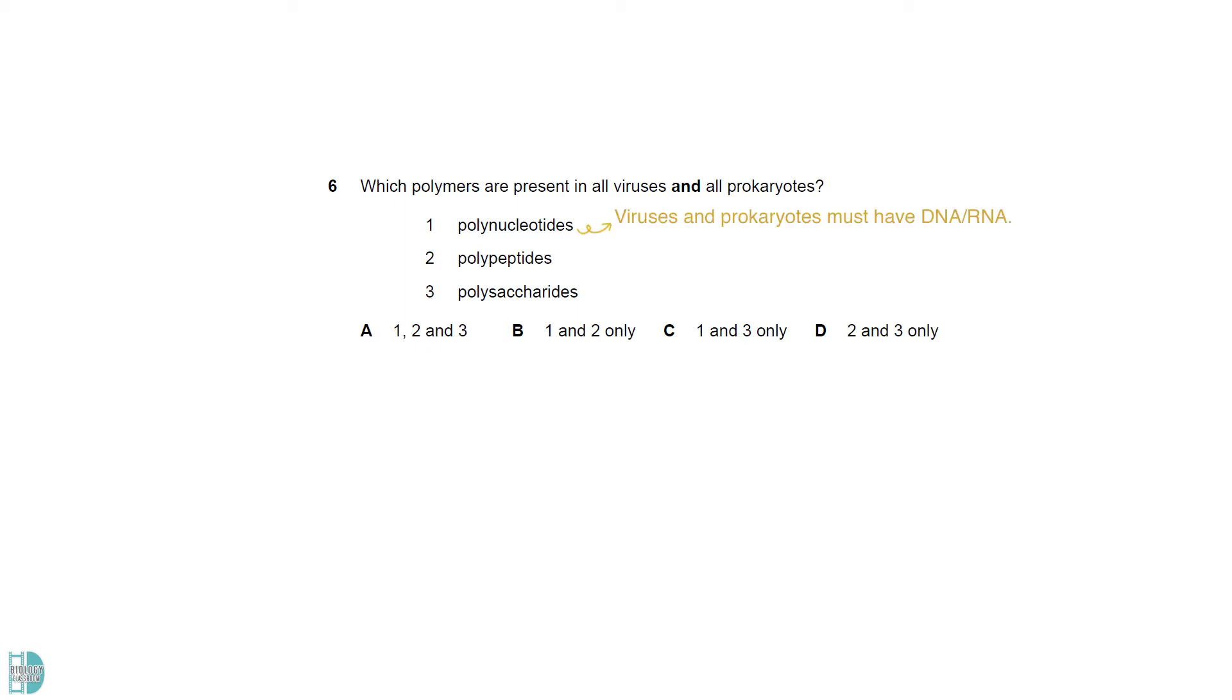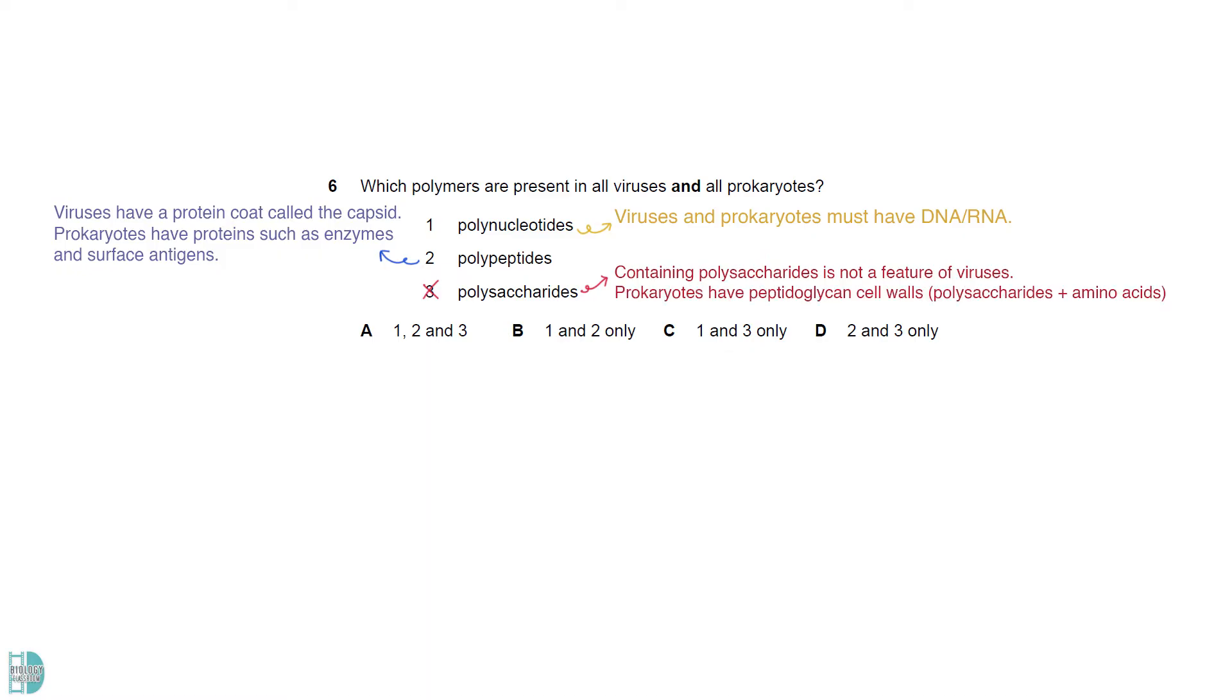Polynucleotides are found in both viruses and prokaryotes. They must have RNA or DNA. Polypeptides are also found in both. Viruses have a protein coat called a capsid, while prokaryotes have proteins such as enzymes and surface antigens. Containing polysaccharides is not a feature of viruses. Prokaryotes have peptidoglycan cell walls, which are composed of polysaccharides and amino acid.